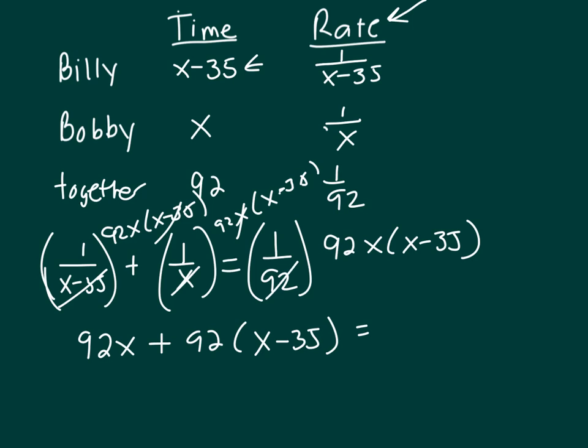And on the right-hand side the 92's cancel and you're left with X times X minus 35. Notice how I've just gotten rid of my fractions. I never get rid of my fractions and my parentheses all in one step.